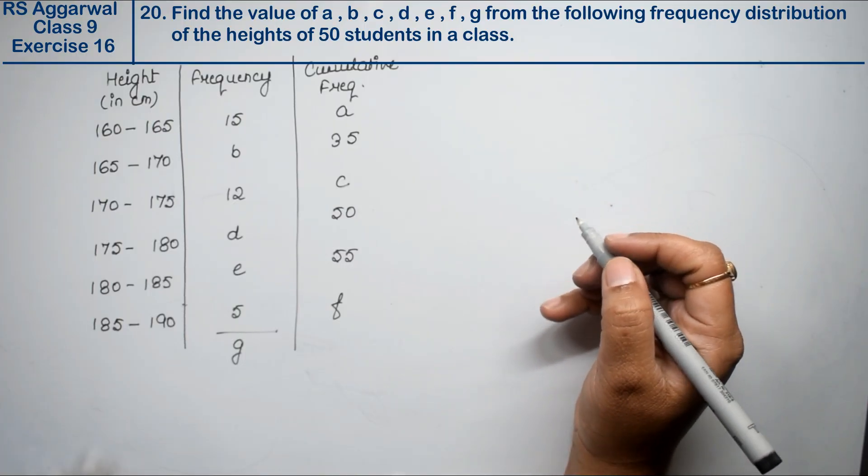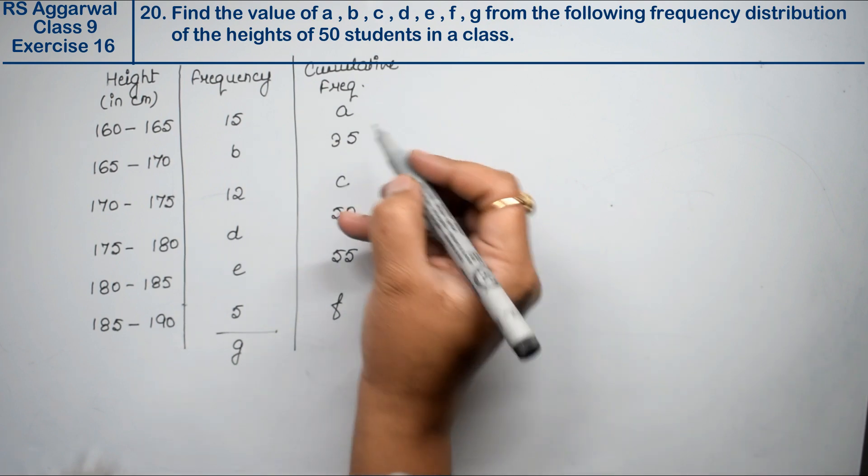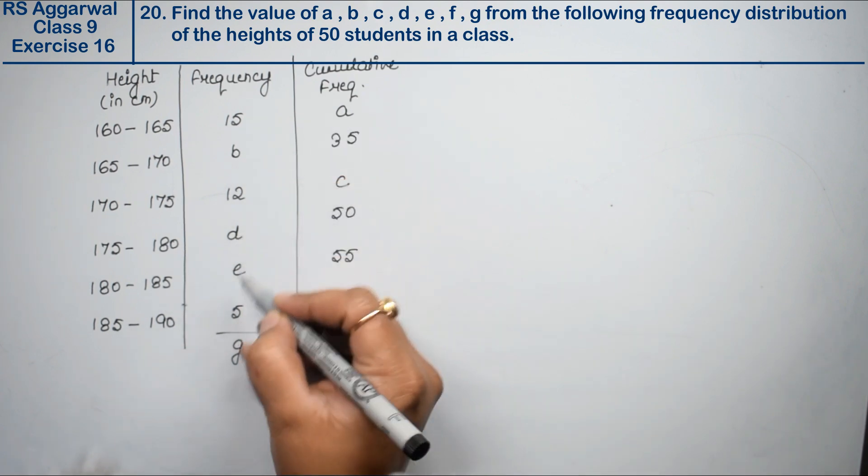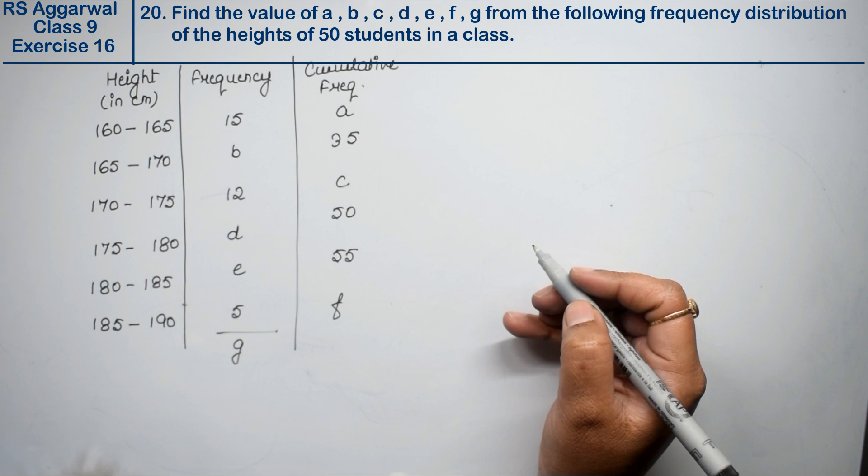Let's do question number 20 of exercise 16, presentation of data in tabular form. Find the value of A, B, C, D, E, F, G from the following frequency distribution of the height of 50 students in a class.